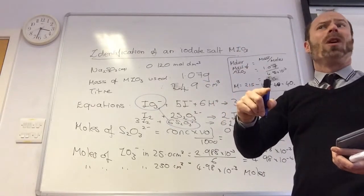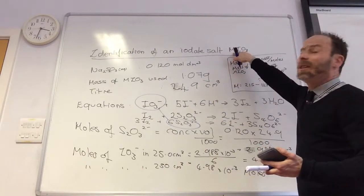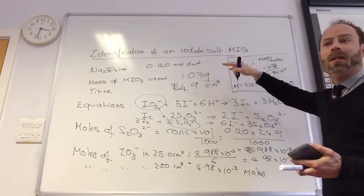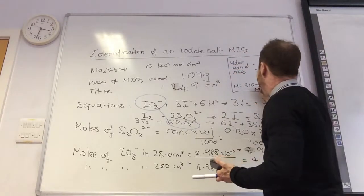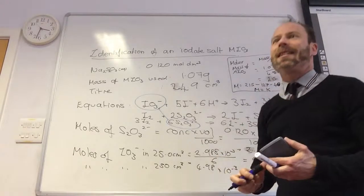Why has it got to be group one? Because it's only plus one. So M equals potassium.